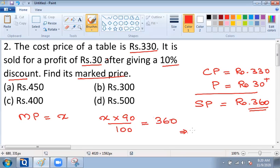So from this I can see that X is equal to 360 into 100 divided by 90, and thus I will get X is equal to 400.